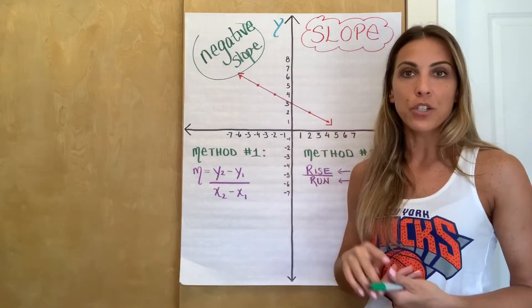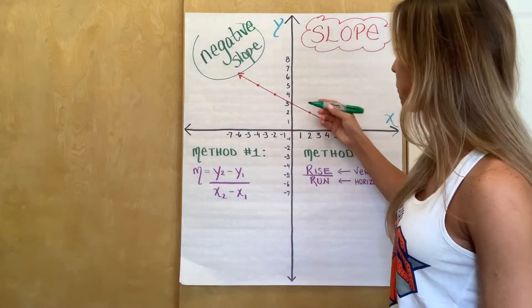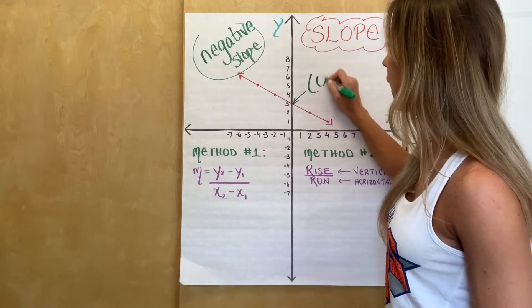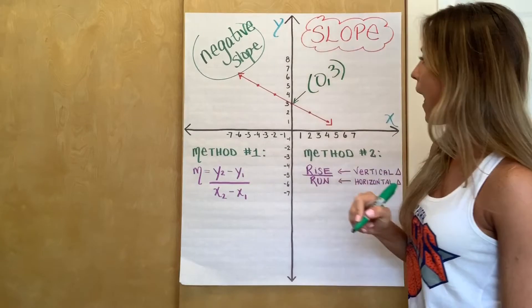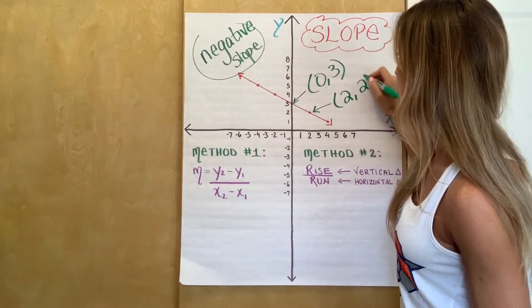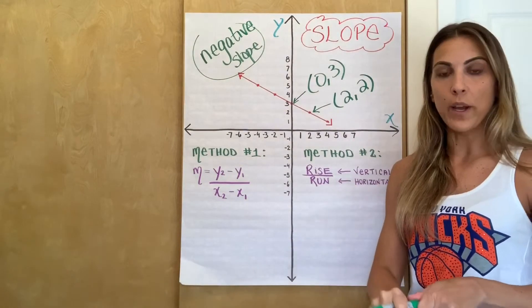So I'm going to go ahead and choose a random two points. So let's start with this guy right here, the y-intercept, which is located at (0, 3). And then I'll choose the point to the right of it, which is the point (2, 2). Okay? So I've chosen my two points.